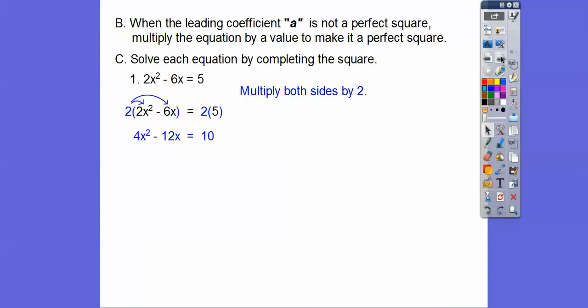And then we can do b squared over 4a. So 144, 12 squared over 4 times 4. And that gets us 9. So we add 9 to both sides.